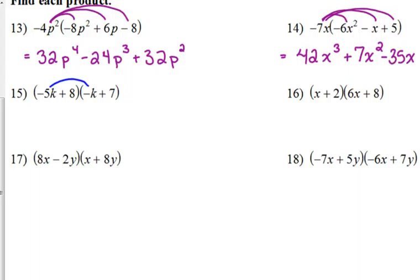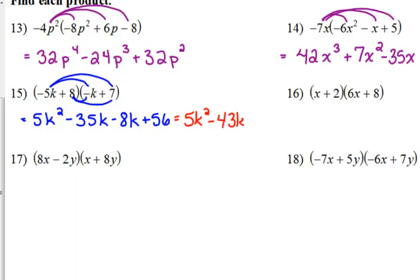Let's FOIL. Negative 5k times negative k gives us positive 5k². Negative 5k times 7 would be negative 35k. That's our outside two terms. Our inside two terms give us negative 8k, and our last, positive 8 times positive 7 is positive 56. Here's a case where we do need to combine some like terms. So, 5k² is by itself, but we do need to combine those two linear terms. Negative 35 and negative 8 give you negative 43k, and then we've still got the positive 56 on the end.